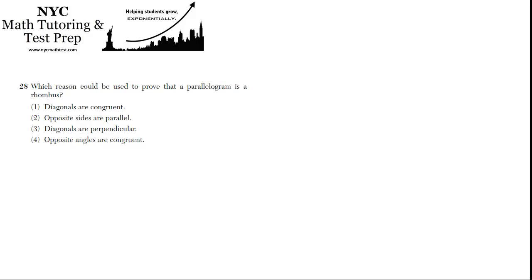Which reason could be used to prove that a parallelogram is a rhombus? The first option: diagonals are congruent. So, could you have a rhombus whose diagonals are not congruent?